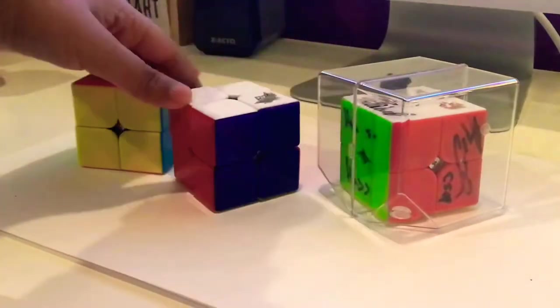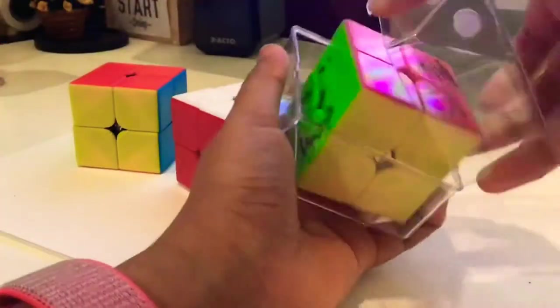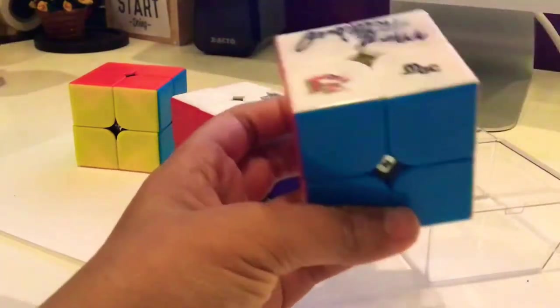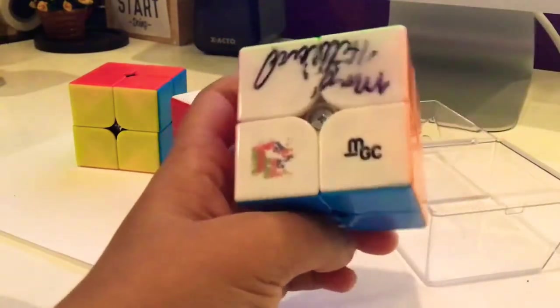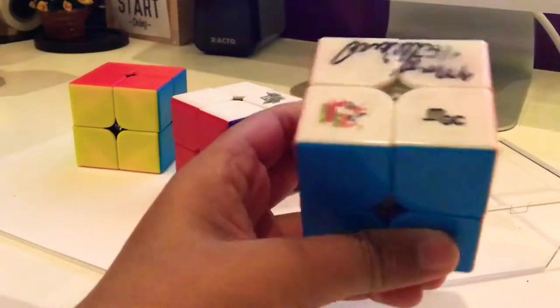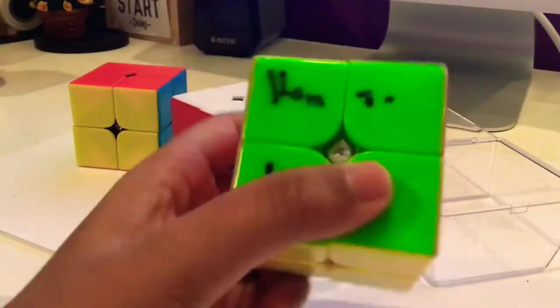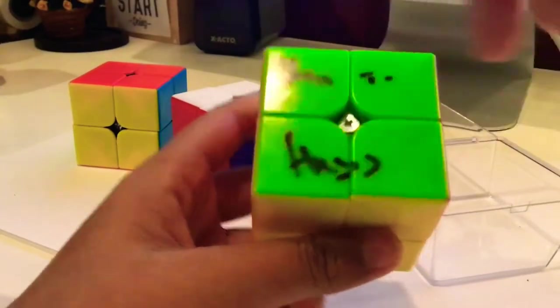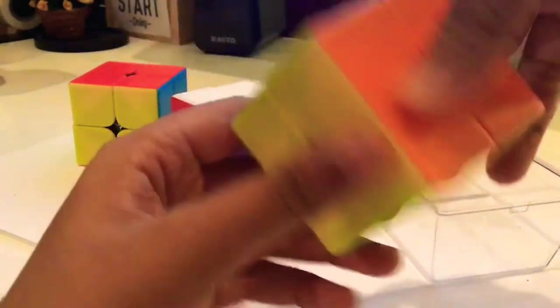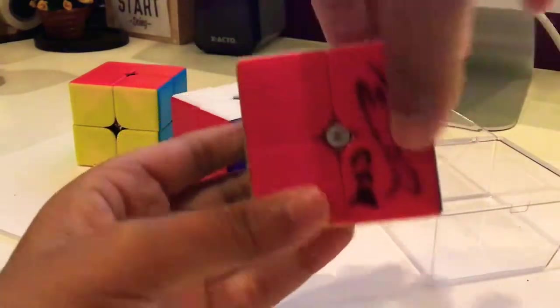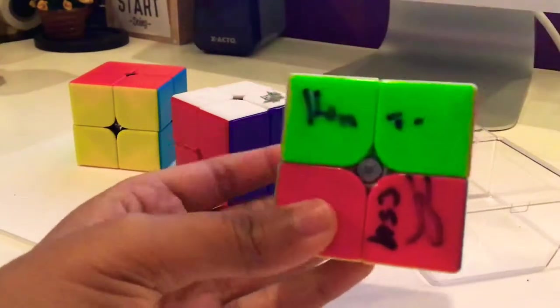Next up, this is a YJ MGC V2 2x2 that's magnetic and it's signed by Max Hilliard, Kevin Hays, and Cube Solve Hero, which is really cool. This is basically the cube where I get all my signatures.